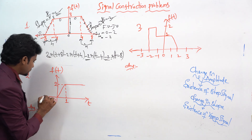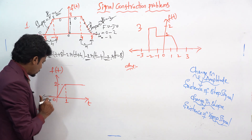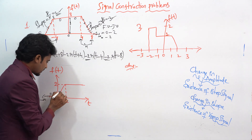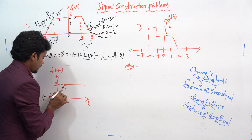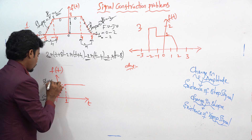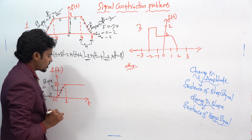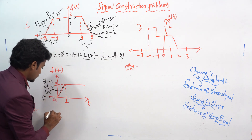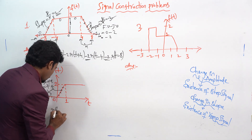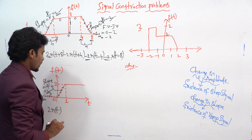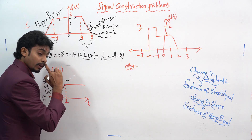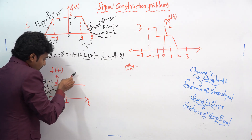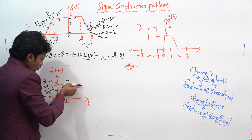For the second question: from minus infinity to 0 you cannot find any value, so that is zero. Whenever you see t = 0, there is a drastic increase in the slope. The slope equals 2 divided by 1, which equals 2. You can write this as r(t) — or r(t − 0) — giving 2·r(t). The signal keeps increasing like this, but practically it stops.